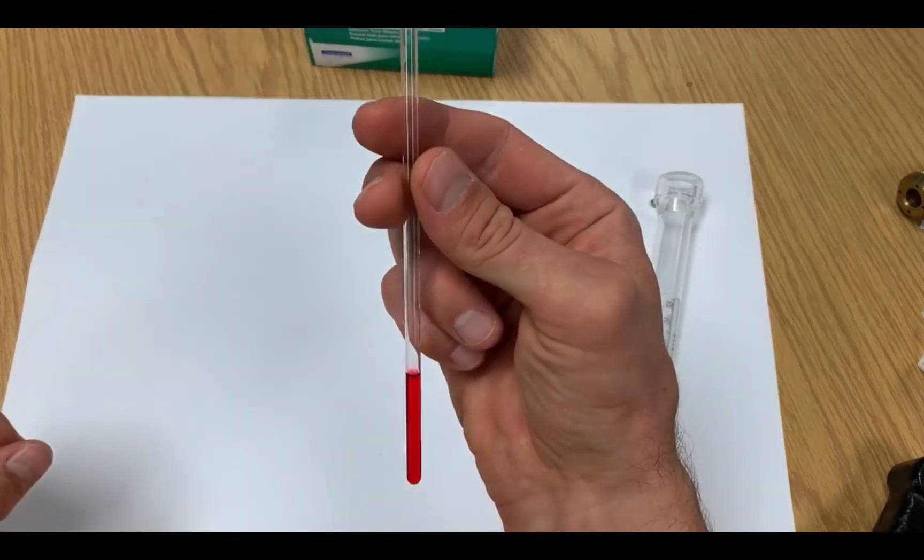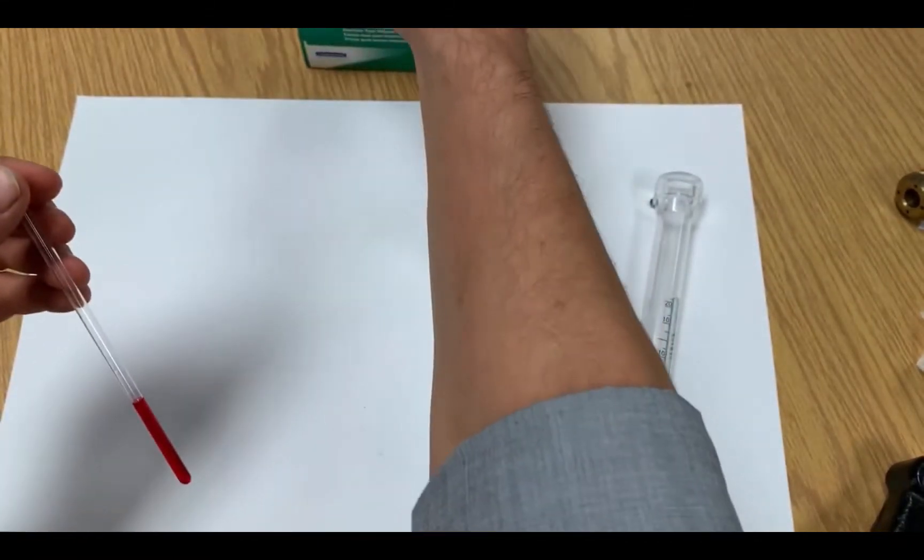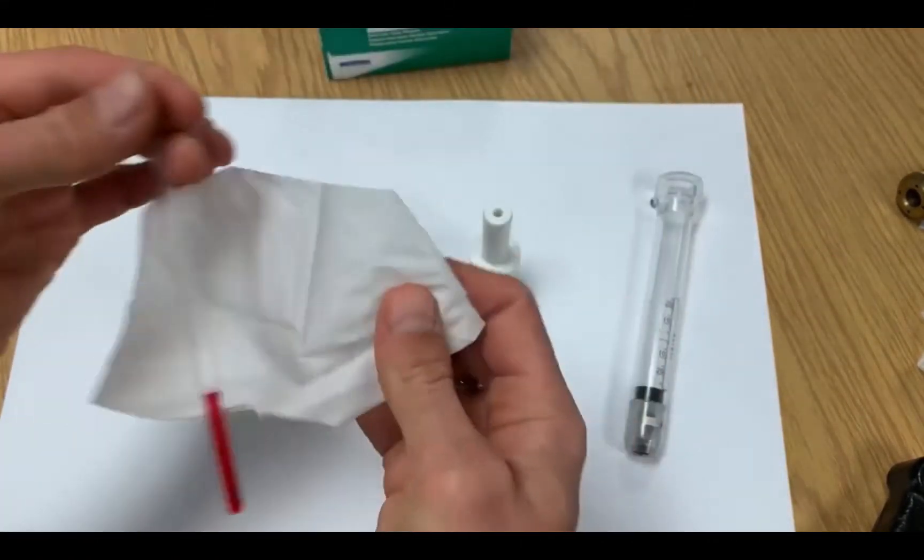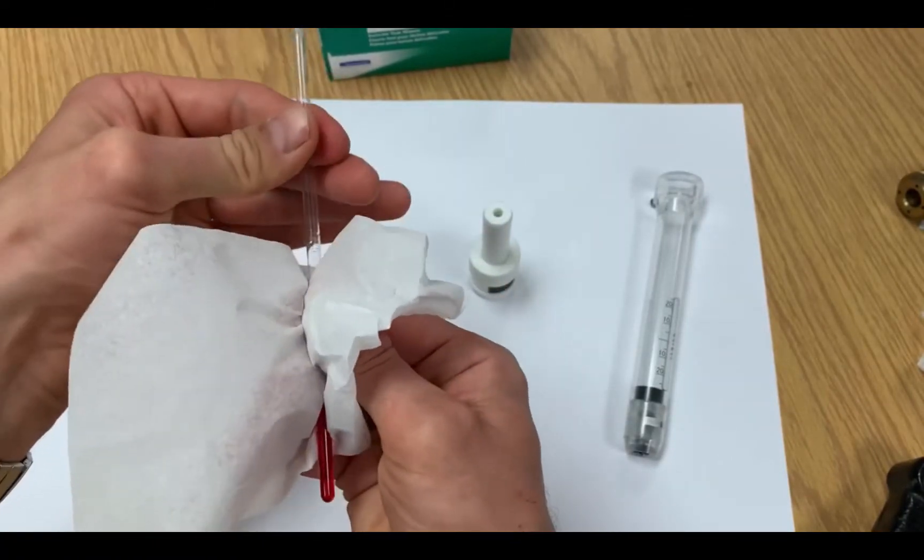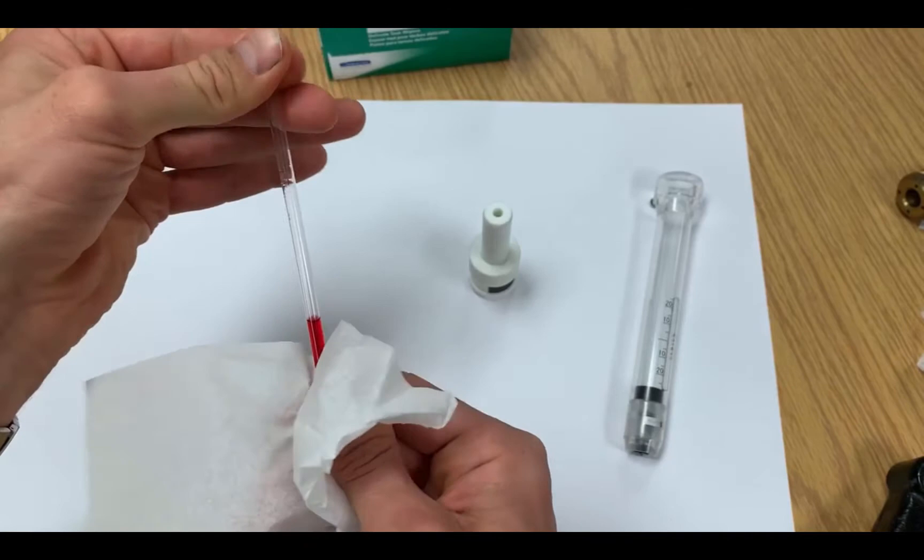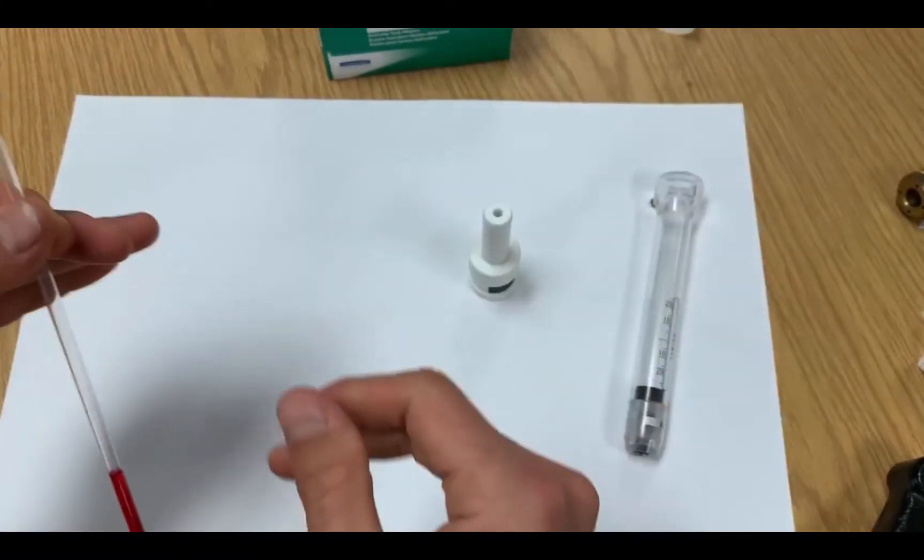It's important to always wipe your NMR tubes down with a Kim wipe before you put them in the sample holder. Any grease or dust that might be on the tubes will be transferred to the sample holder or eventually to the NMR probe.